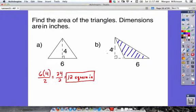6 times 4 divided by 2. We just did that. We get 12 square inches—this is the third way we can write our answer.